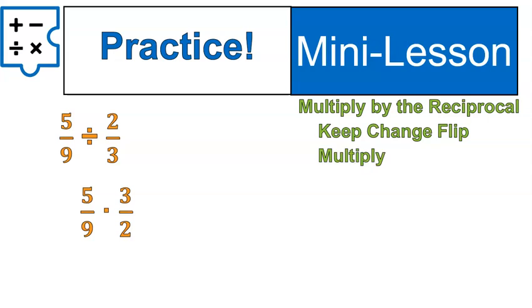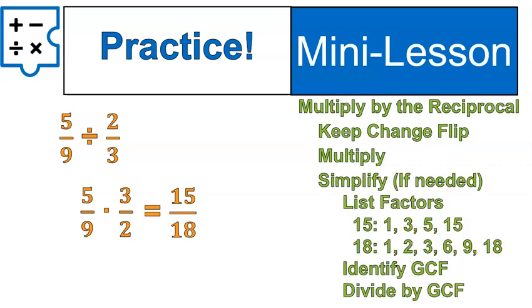5 times 3 is 15. 9 times 2 is 18. Step number 4. Simplify, if needed, following those steps. We list the factors of both numbers, identify our greatest common factor, which is 3, and we'll divide both 15 and 18 by 3 for our final answer of 5 over 6. Not bad.